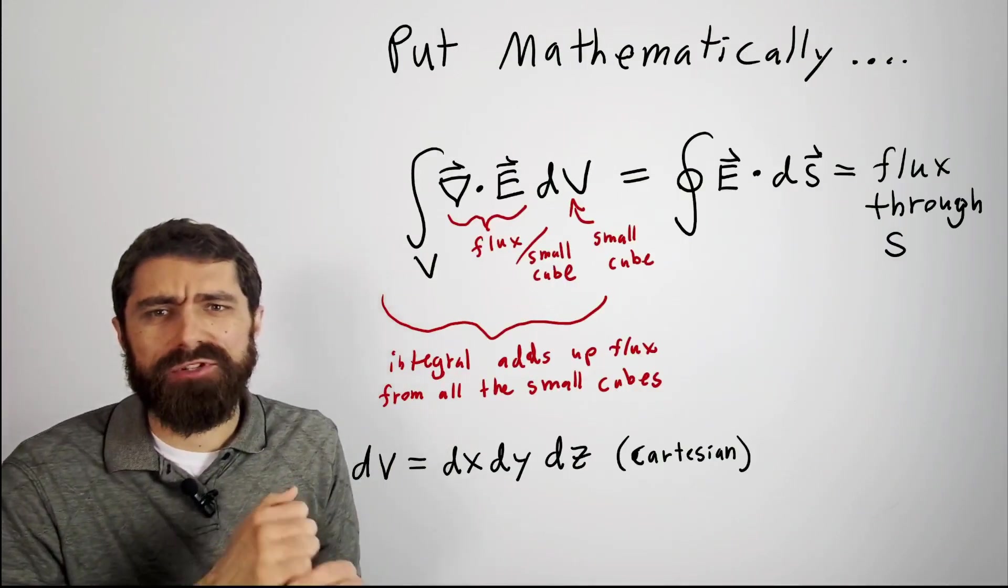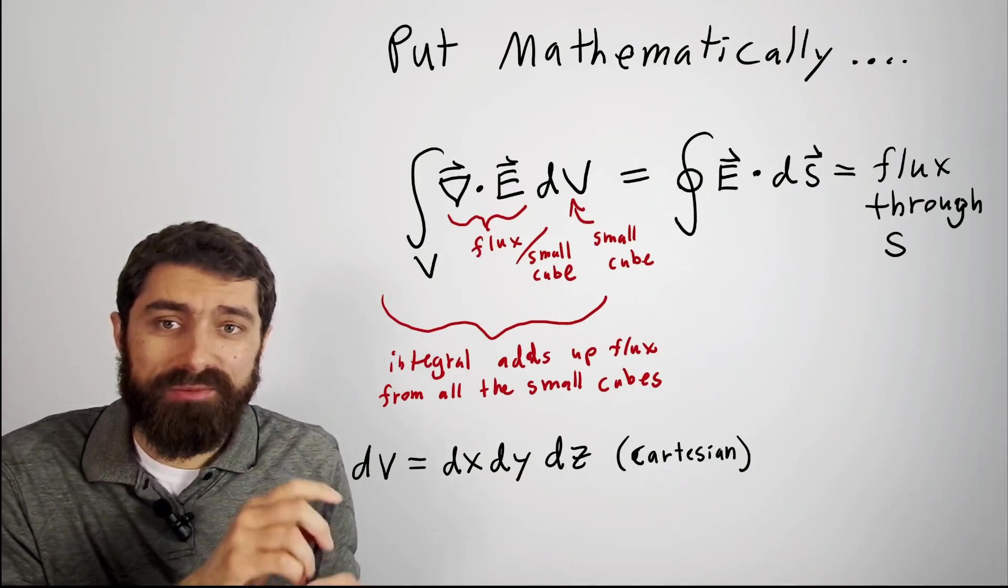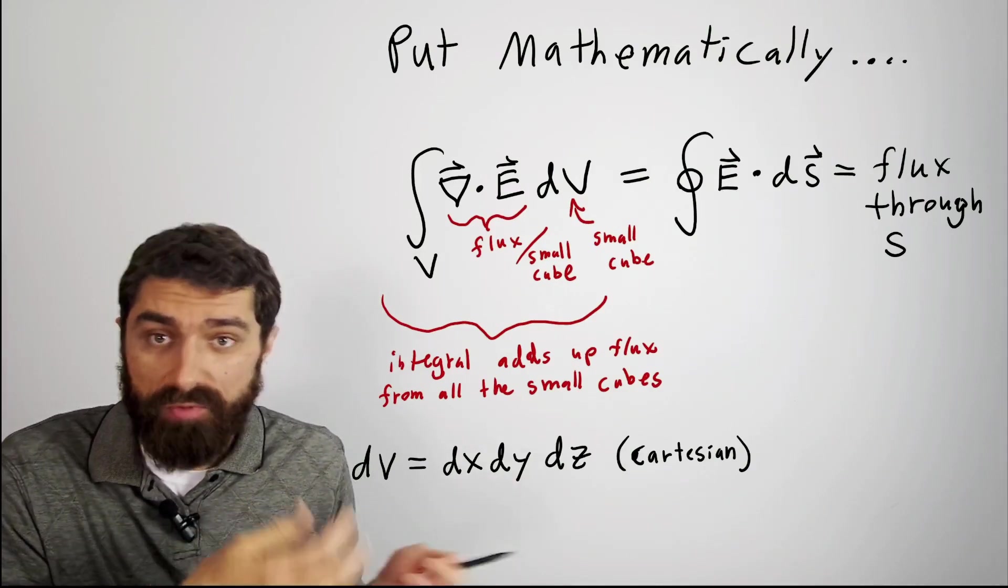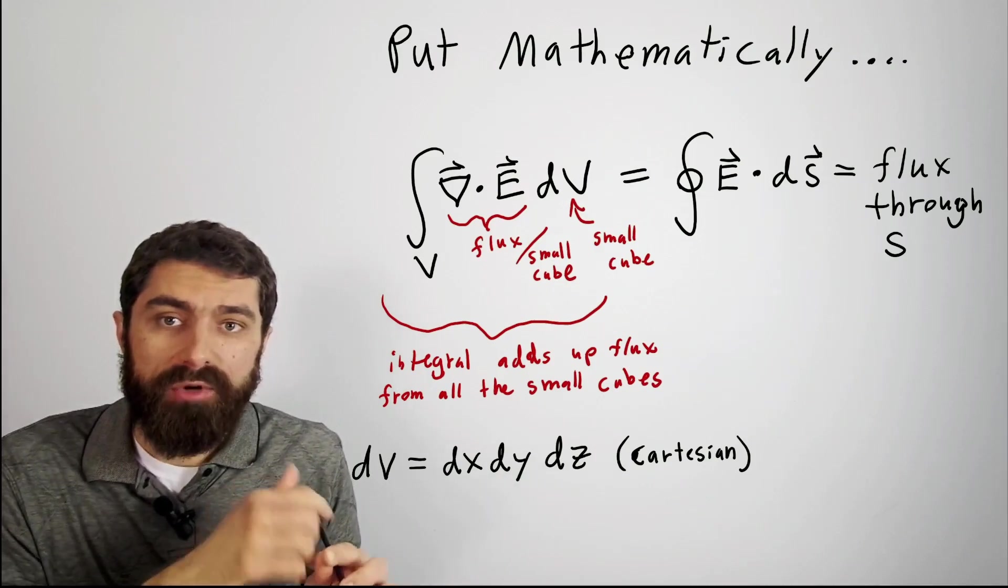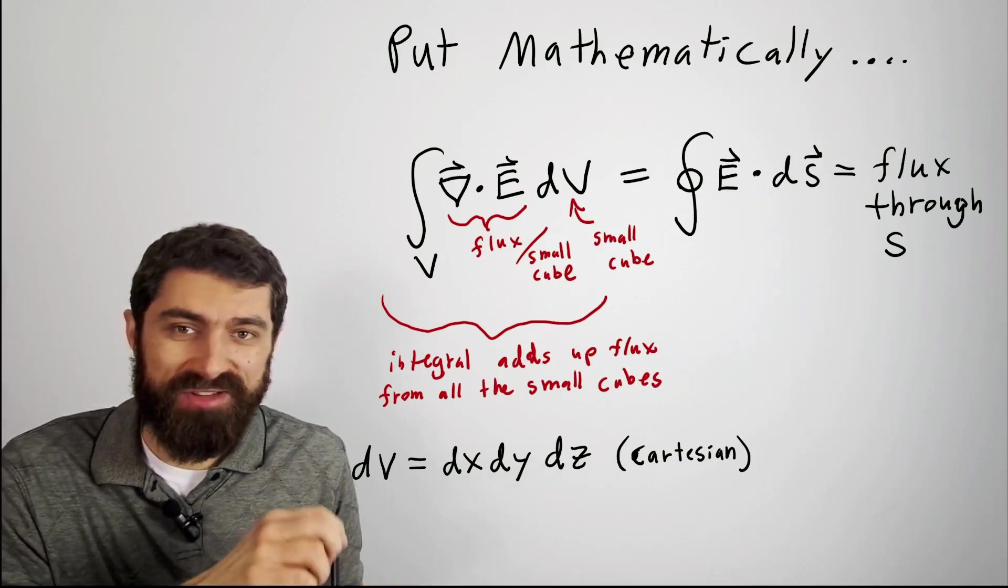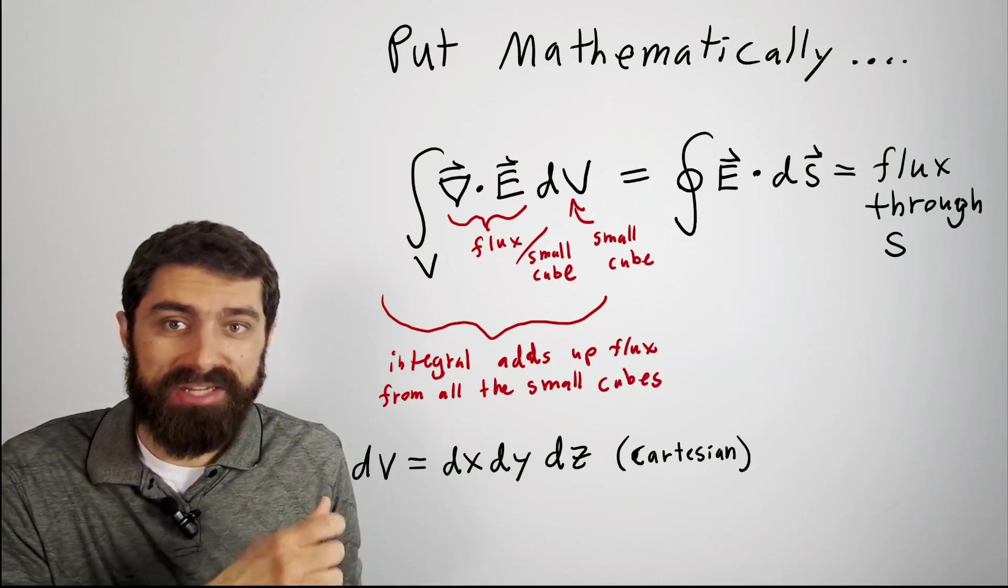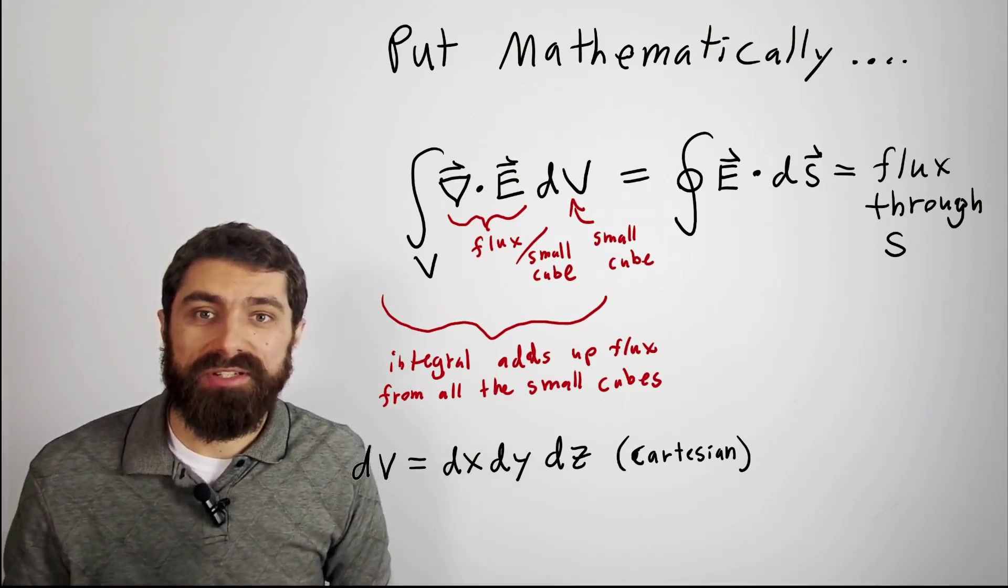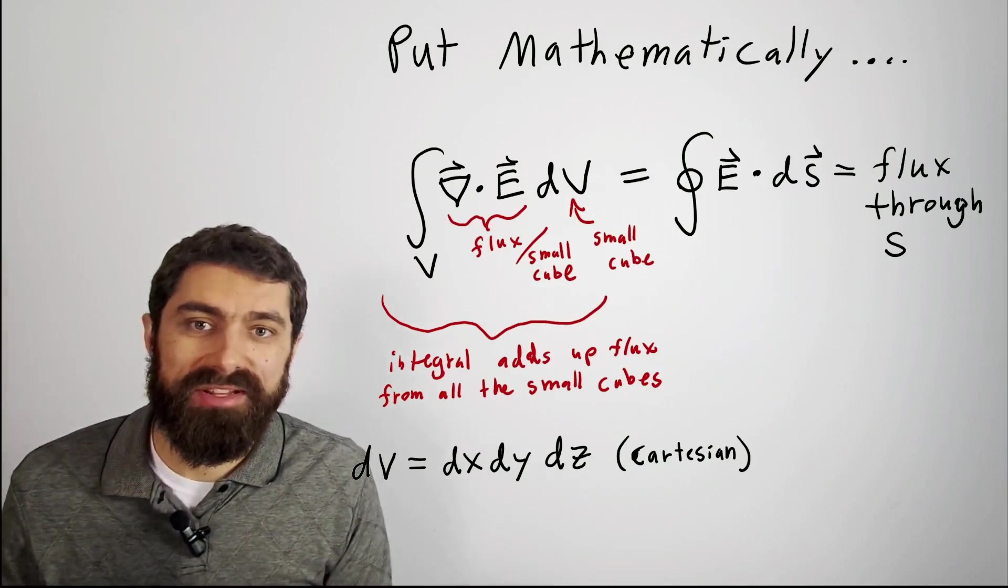So that's basically what divergence is. If you would like some more mathematical details on how you derive this, I would highly recommend you check out Feynman's Lectures on Physics. I have included a link in the description below this video. So thanks for watching, and I'll see you in the next one.